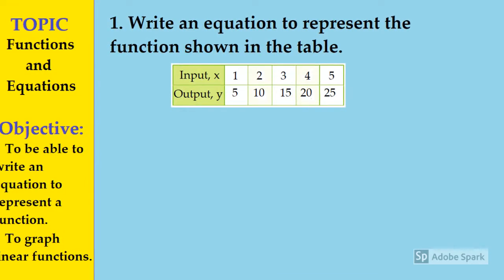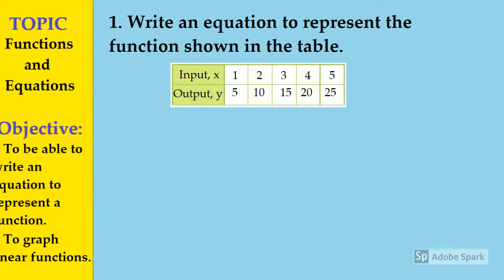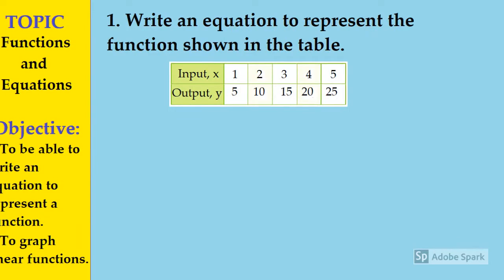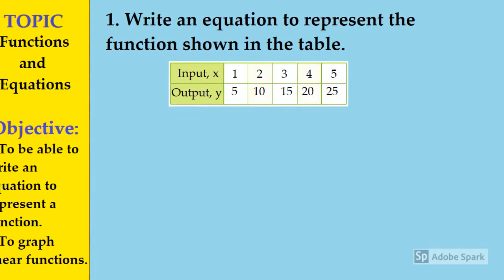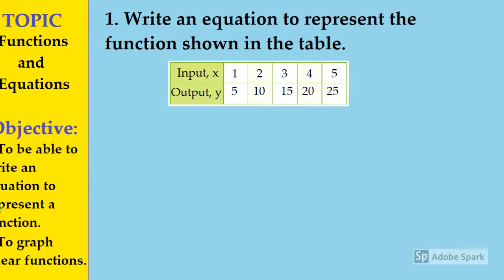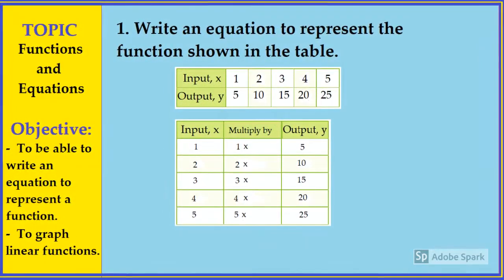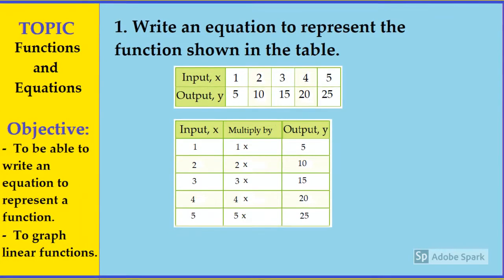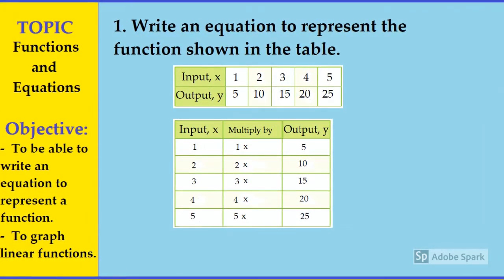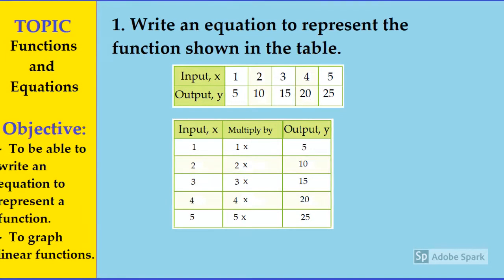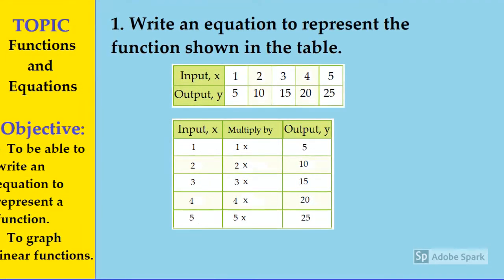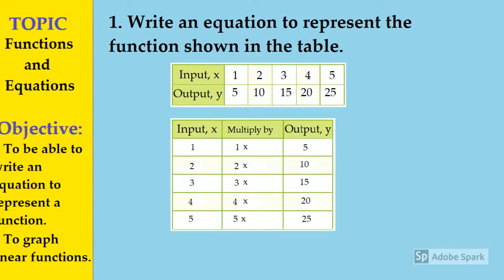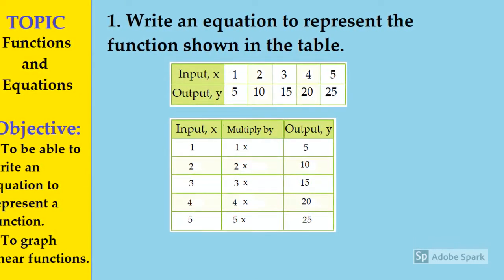You can see that the input is x: 1, 2, 3, 4, 5, and the output is y. If x is 1, y is 5; if x is 2, y is 10, and so on. Let us put the table this way: the input, the function, and then the output. Let us find out y: when the input is 1, the output becomes 5; when the input is 2, the output becomes...